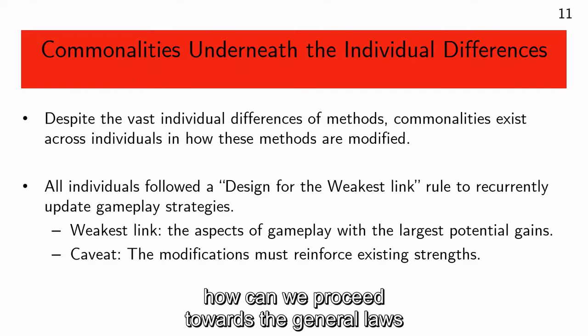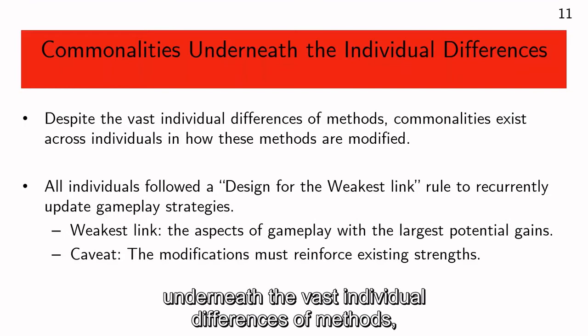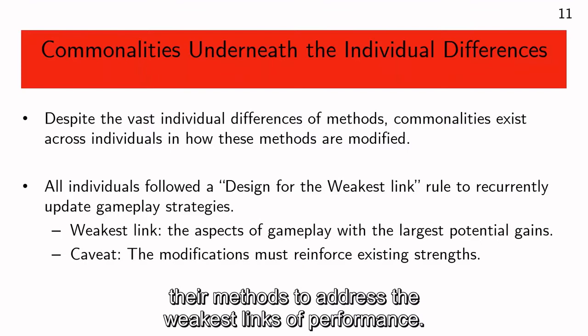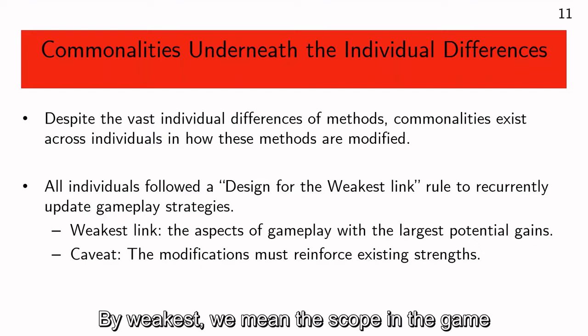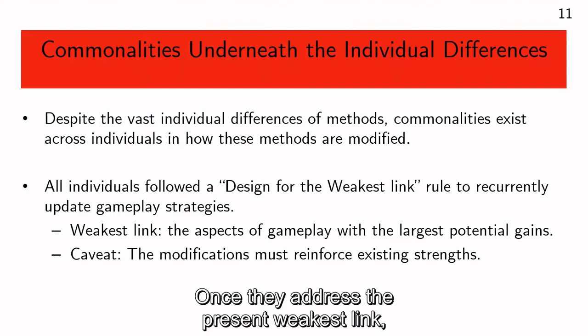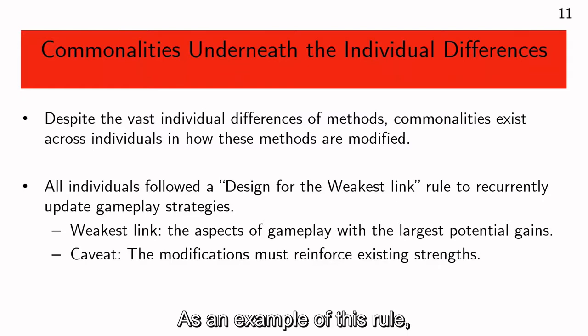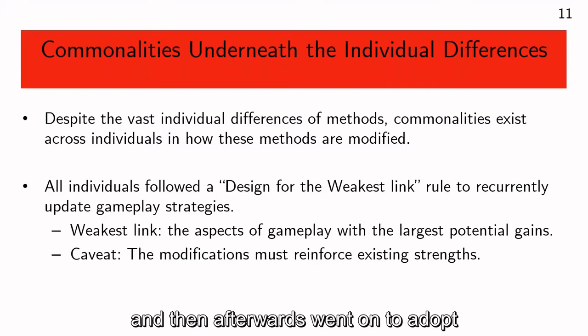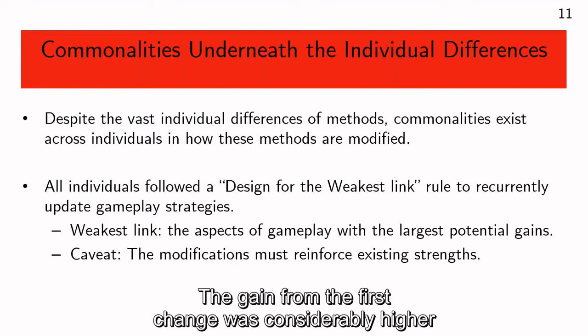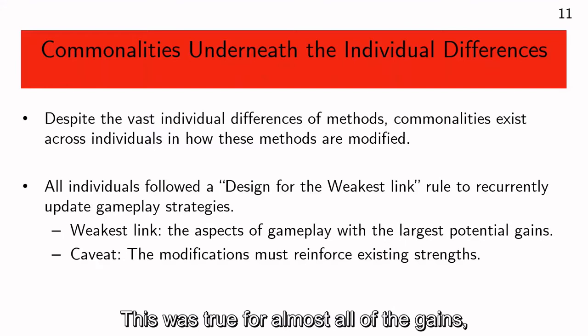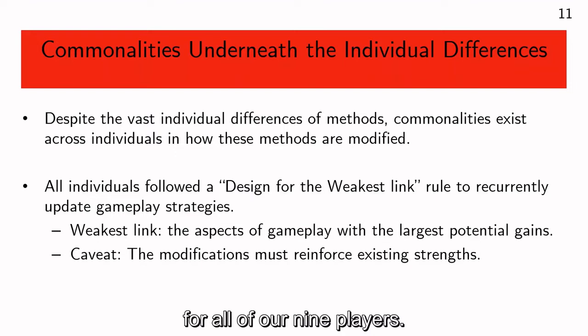So if we can't achieve a common description for all, how can we proceed towards the general laws of individual learning? Underneath the vast individual differences of methods, there also lie some commonalities across individuals in modifying those methods. We find that our nine players recurrently updated their methods to address the weakest links of performance — the scope in the game with the biggest potential gain in points. Once they addressed the present weakest link, they moved on to the next. We name this rule the 'design for the weakest link' rule. For example, Player 7 first adopted the optimal flight path of circles and then afterwards adopted optimal velocities. The gain from the first change was considerably higher than the second, and further refinements yielded even smaller gains.